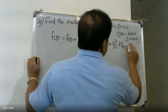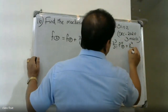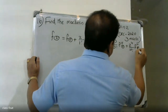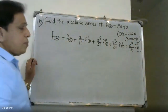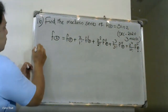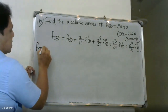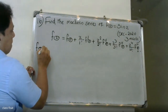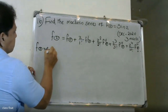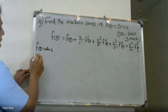So, applying the Maclaurin series formula with f of z equal to sine z.